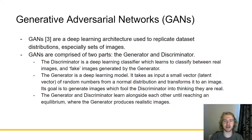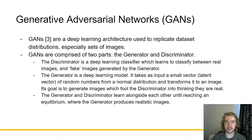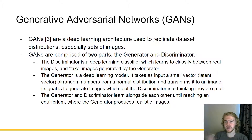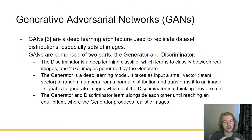So this is where we come in with generative adversarial networks. I've been working with these for years so I will give a brief explanation. GANs for short are a deep learning architecture used to replicate dataset distributions, especially sets of images. GANs are comprised of two parts: the generator and the discriminator. The discriminator is a deep learning classifier which learns to classify between real images and fake images generated by the generator. The generator takes a small vector — also called the latent vector — of random numbers from a normal distribution and transforms it into an image. Its goal is to generate images which fool the discriminator into thinking that they are real. The generator and discriminator learn alongside each other until reaching an equilibrium where the generator then produces realistic images.